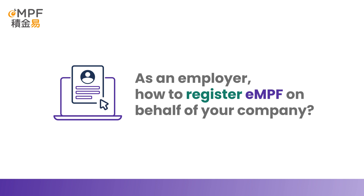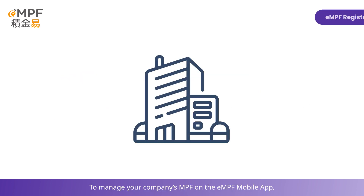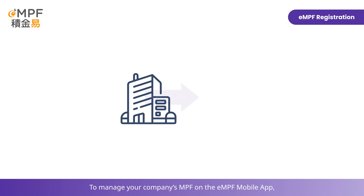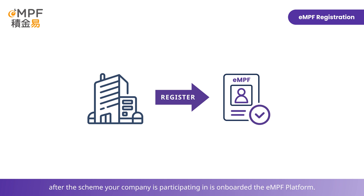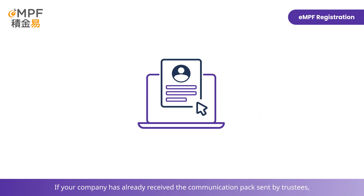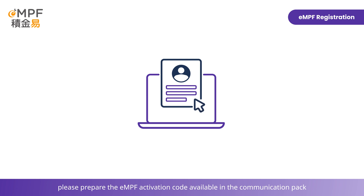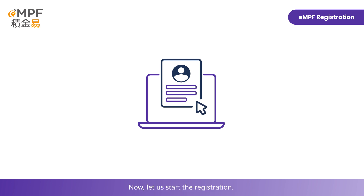As an employer, this guide explains how to register for EMPF on behalf of your company to manage your company's MPF on the EMPF mobile app. You will need to register with EMPF on behalf of your company first, after the scheme your company is participating in is onboarded to the EMPF platform. If your company has already received the communication pack sent by trustees, please prepare the EMPF activation code available in the communication pack to facilitate the registration.